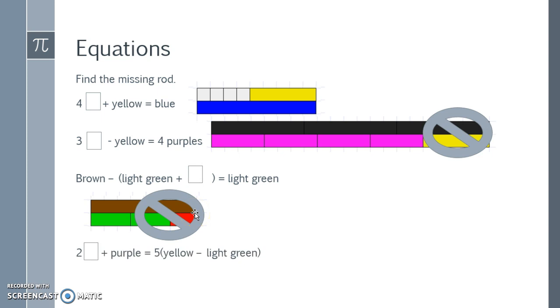Two what plus a purple is equal to five copies of a yellow minus a light green. So I'm going to start with the yellow minus the light green. When I take yellow and I subtract light green, I have two for my space left. So that would represent just a red. So I need five copies of red.